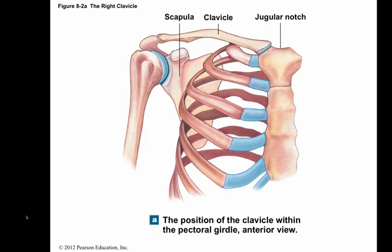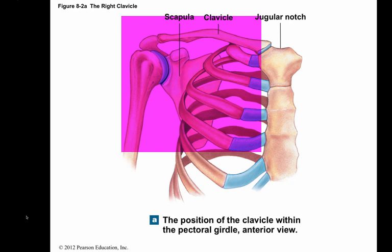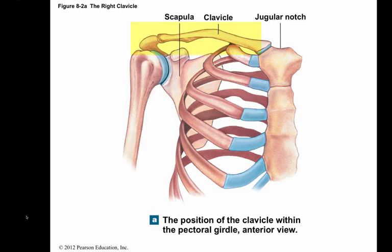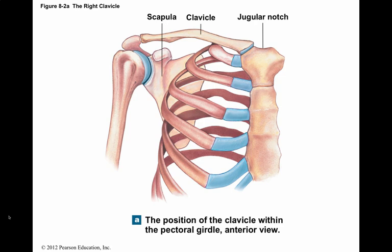Each arm articulates or forms a joint with the trunk at the pectoral girdle, otherwise known as the shoulder girdle. The pectoral girdle consists of two S-shaped clavicles or collarbones and two broad, flat scapulae or shoulder blades. The medial end of the clavicle directly articulates with the manubrium of the sternum. This is the only direct connection between the pectoral girdle and the axial skeleton.